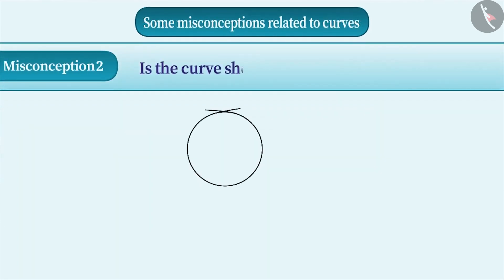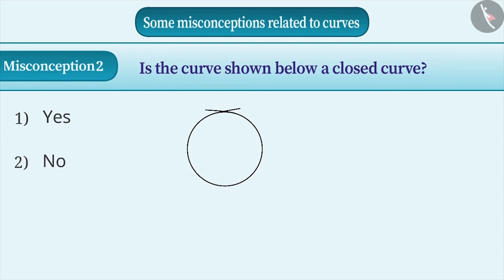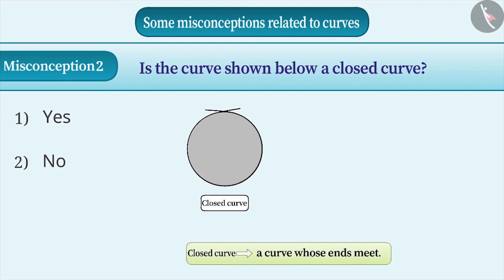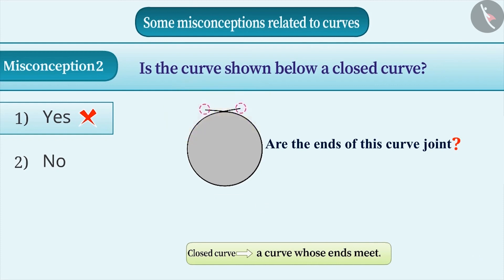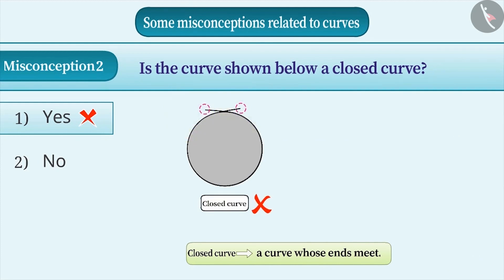Misconception 2: Is the given curve a closed curve? Students feel that since a curve is covering a region, this curve is a closed curve. They ignore the definition and answer option 1, which is incorrect. The definition of a closed curve states that a curve whose ends are joined is called a closed curve. Are the ends of this curve joined? The ends of this curve are not joined, therefore it is not a closed curve. A curve whose ends are open is an open curve. Therefore, the correct answer is option 2.